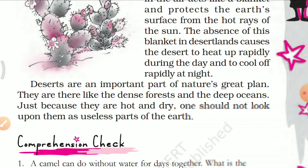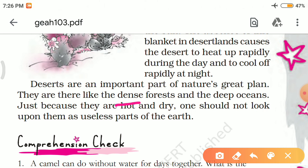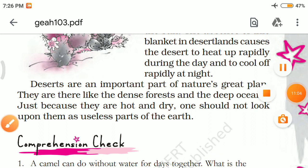Deserts are an important part of nature's great plan. Just as there are dense forests — dense means thick and heavy — and deep oceans, deserts are also important. Just because they are hot and dry, one should not look upon them as useless parts of the earth. Deserts are very important and useful parts of the earth.